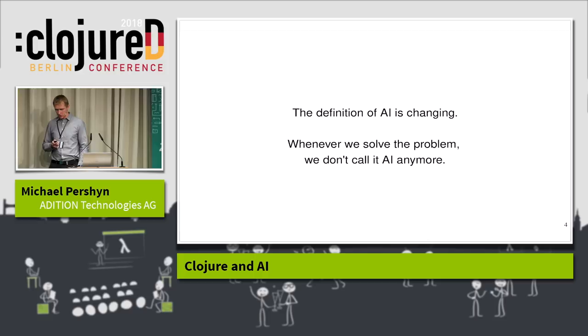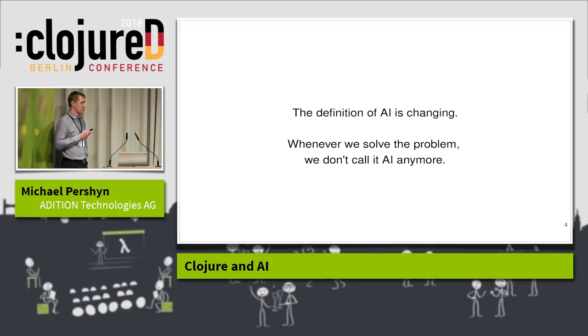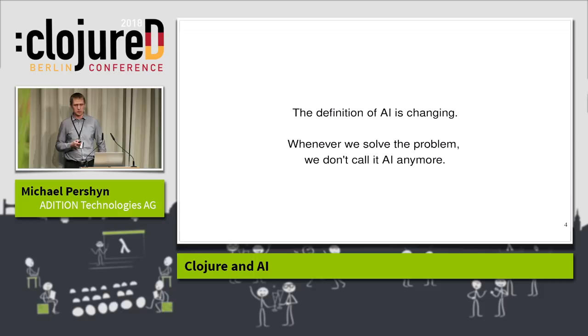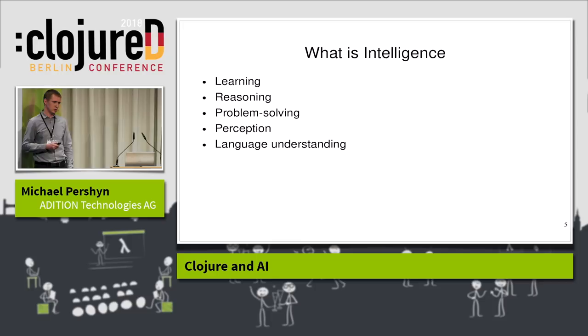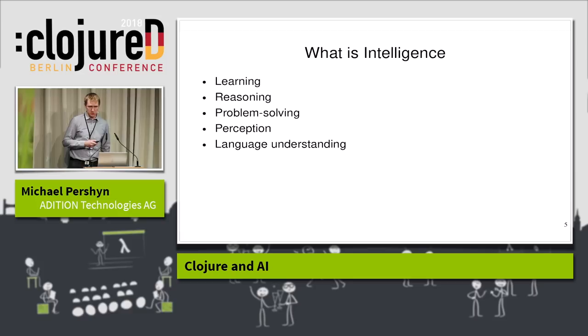Let's put 'artificial' aside and try to define intelligence. Mainstream thinking in psychology regards human intelligence as a set of separate components: learning, reasoning, problem solving, perceiving, and understanding language. Note that creativity, emotions, humor, and other traits that humans have are not included there.